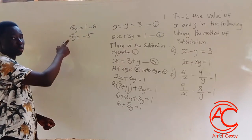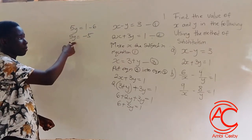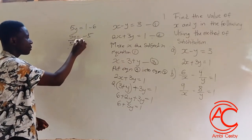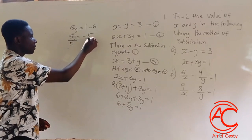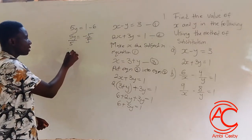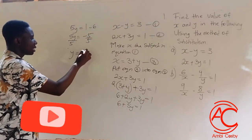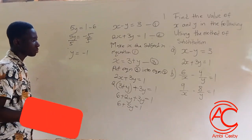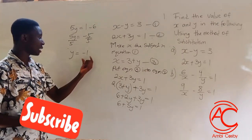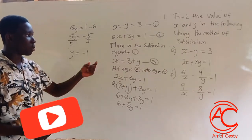We have 5y is equal to 1 minus 6, which is negative 5. We want y, not 5y, so we divide both sides by 5. Now y is equal to negative 1.